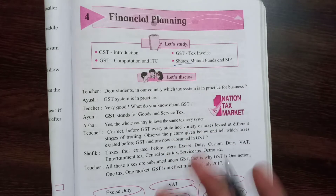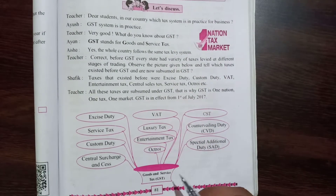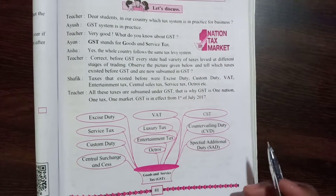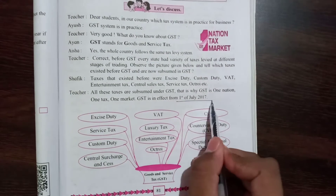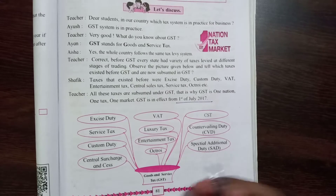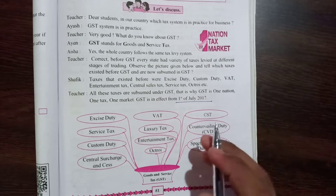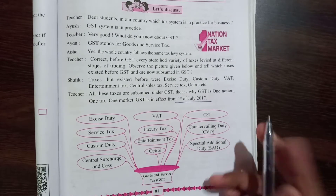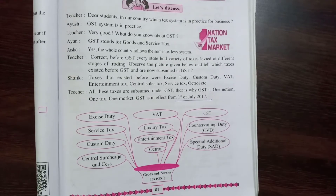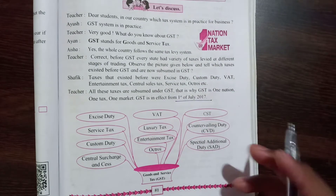GST was a major change in the taxation system of India, which was brought into existence on 1st July 2017. You would have heard about GST many times during the 2019 general elections, as this topic was raised a lot. On the whole, GST was a really major change that occurred in the taxation system of India.